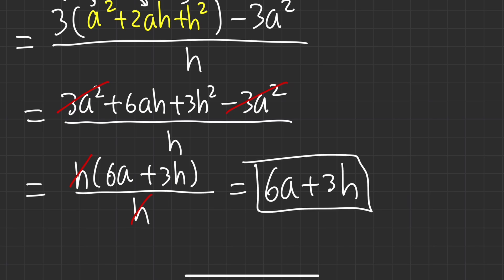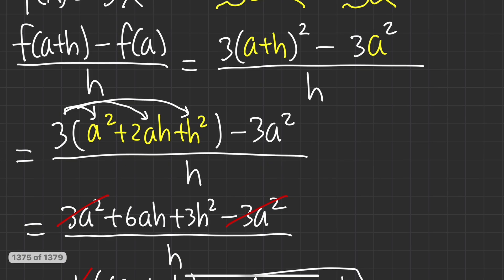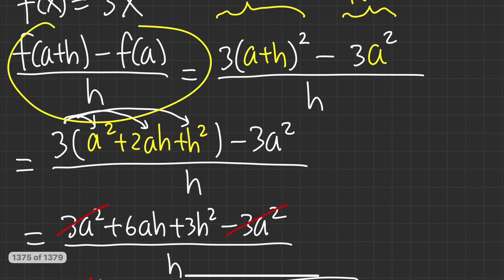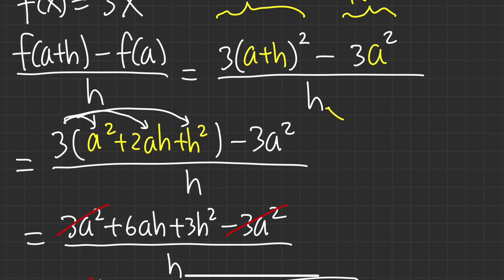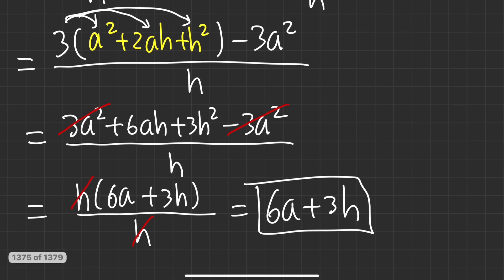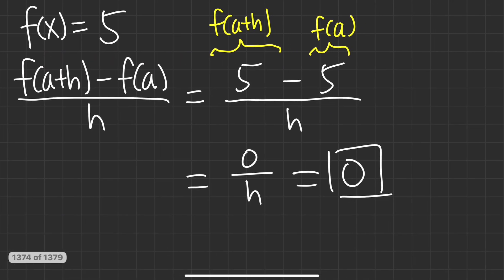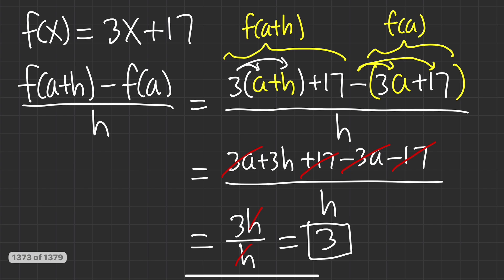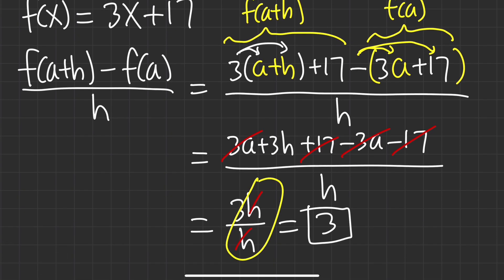Here's a small tip: whenever we do difference quotient questions with this formula, the h on the bottom should always be cancelled with an h on the top somehow. As you can see, it happened right here — the h cancelled. In the constant case it was zero so h was gone too, and in the linear case the h got cancelled as well. Keep that in mind.